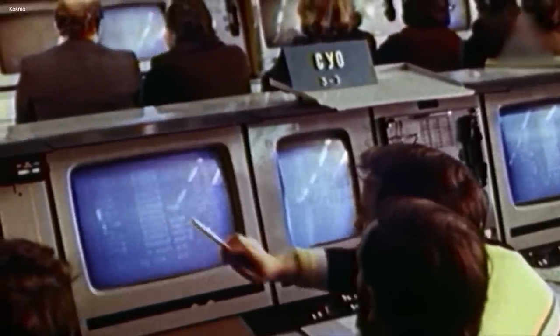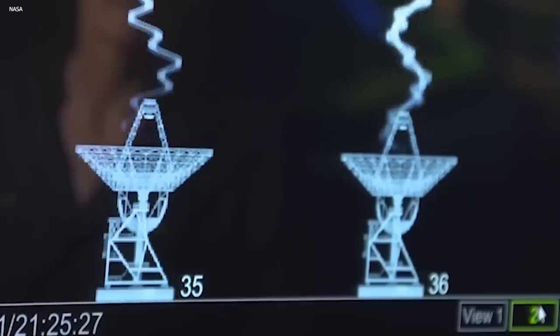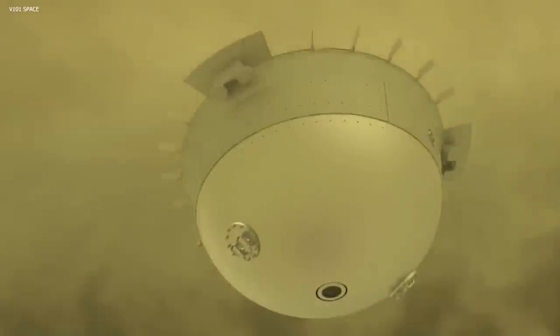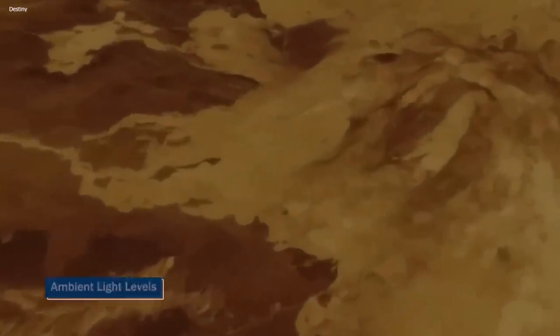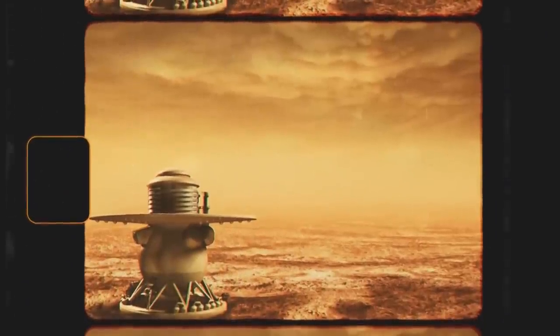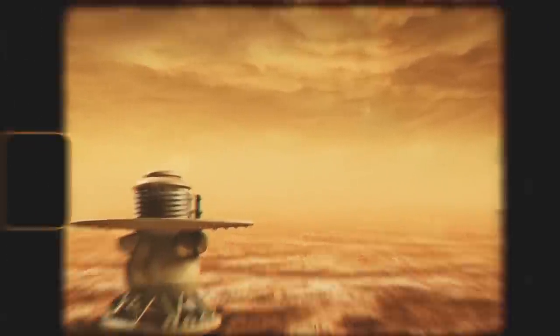It was constantly going from one to the other. According to the data returned by Venera 8, the air pressure on Venus was around 90 times that of Earth's atmosphere at sea level. The Venera 8's working pressure sensor verified Venus's oppressive atmosphere. Still, it also measured ambient light levels on the surface, indicating that future cameras should be able to record the Venusian sights.